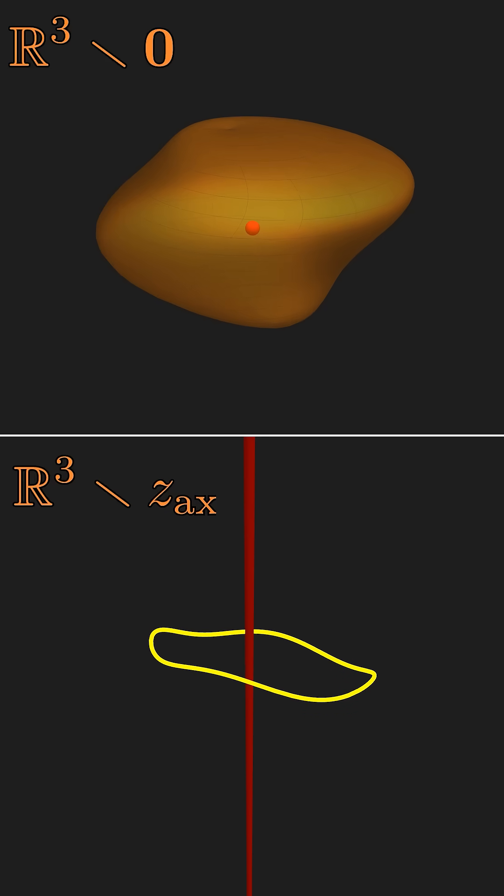The top is the Euclidean 3-space with no origin, and the bottom is without the z-axis. The bottom space has a one-dimensional hole, since there is one obstruction that can prevent a loop from contracting down to a single point. And the top space has a two-dimensional hole, as there is one obstruction that prevents a sphere from contracting to a single point.